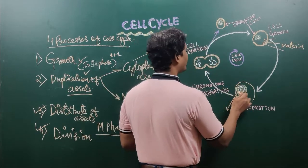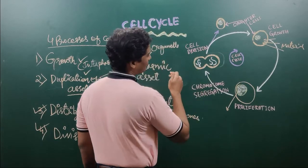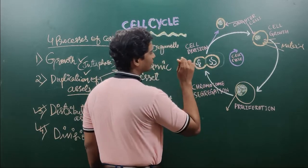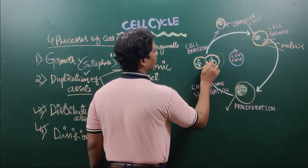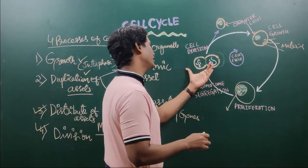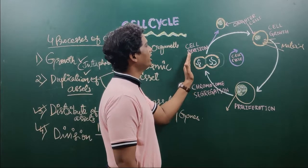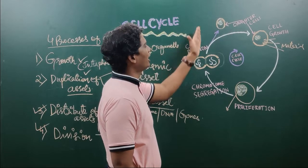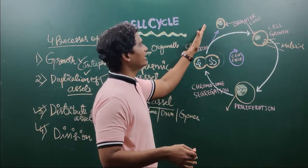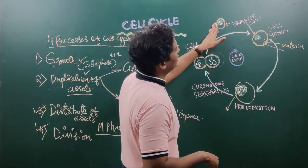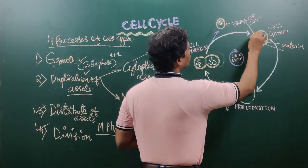After getting bulky and duplicating assets, the cell distributes the assets. It divides itself, producing two daughter cells. It gives one set of assets to one daughter cell and keeps another for itself. After giving the equal share to the daughter cell, what is the fourth process? Division. After giving equal share to the daughter, the mother cell makes the daughter cell independent by giving it all the assets. The daughter cell is now independent, and the mother cell continues the same process again.